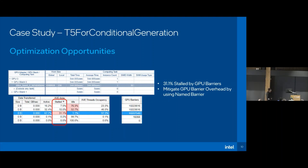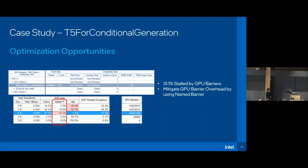We still have more optimization opportunities, even though this kernel has already obtained impressive performance improvement. We observed that the stall portion is non-negligible — about 31% is stalled by GPU barriers. So we are also working to mitigate that barrier overhead.